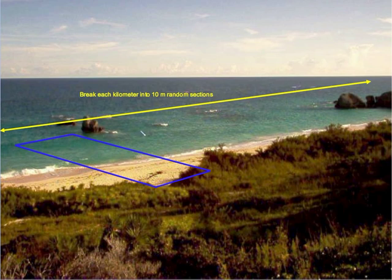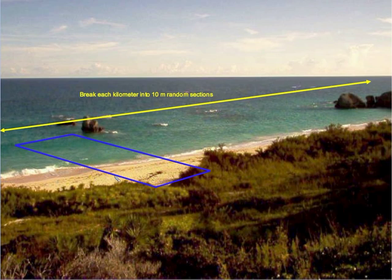Each subsection is numbered 1 through 100, since there are 100 ten-meter sections in one kilometer. Then, using a random number generator — a table of random numbers or an app on a phone or computer — we select 5, 6, or maybe 25 samples, depending on available time and manpower. We visit those randomly selected areas and mark off a belt transect extending from the low tide mark all the way to the high tide mark, counting everything in that area to determine all types of barnacles and the population of each.